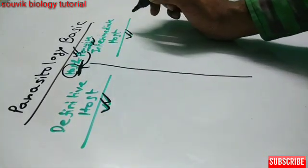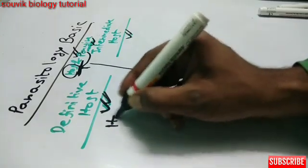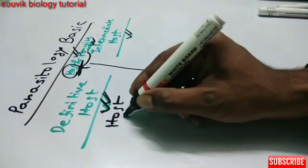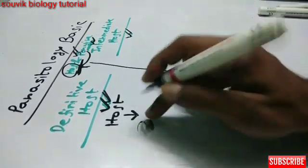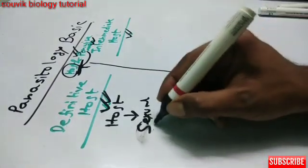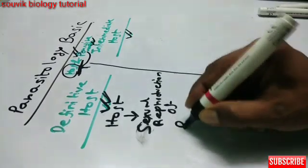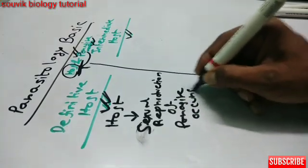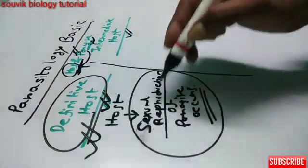In this video I'm talking about what is the definitive host and intermediate host. The definitive host is the host in which sexual reproduction of the parasite occurs. The host in which sexual reproduction of the parasite occurs is known as the definitive host.